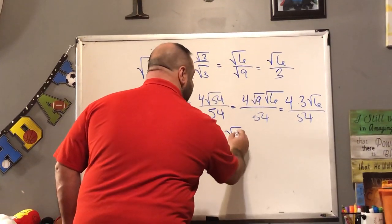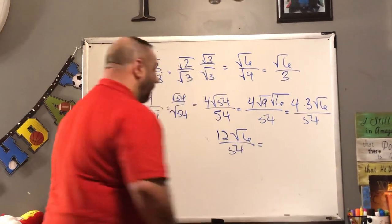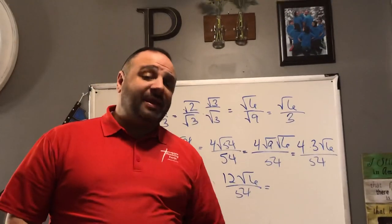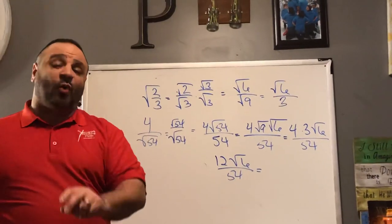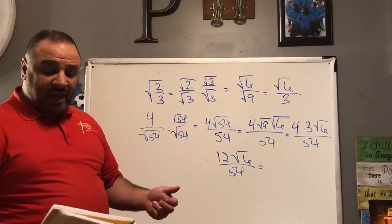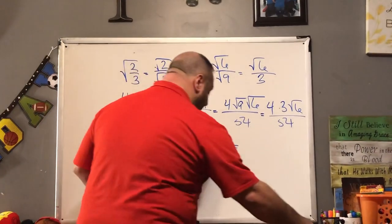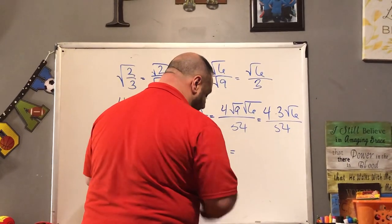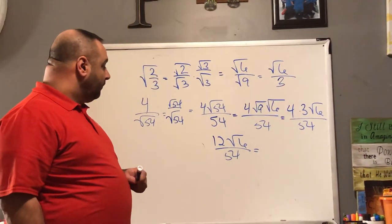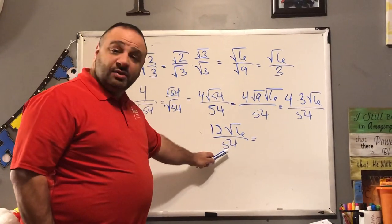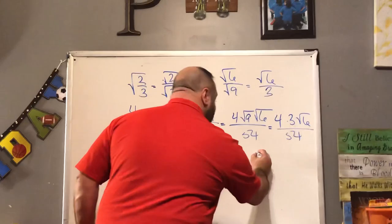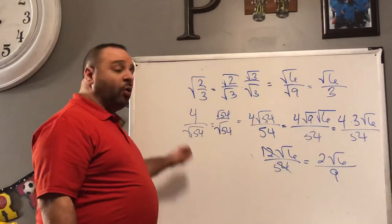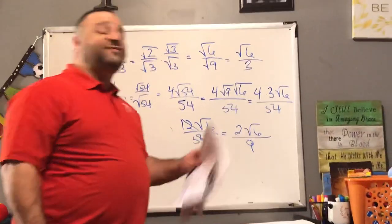We now have 12 times the square root of 6 over 54. Remember, not only must the radical be in simplest form, but the fraction must also be reduced. Both 12 and 54 are divisible by 6: 12 divided by 6 is 2, and 54 divided by 6 is 9. The final simplified answer is 2 times the square root of 6 over 9.